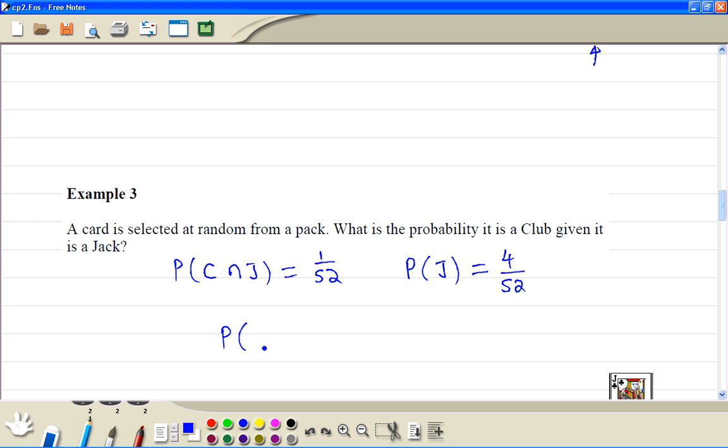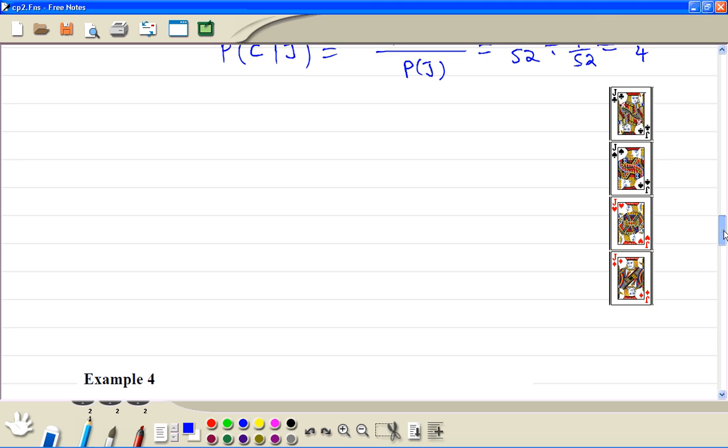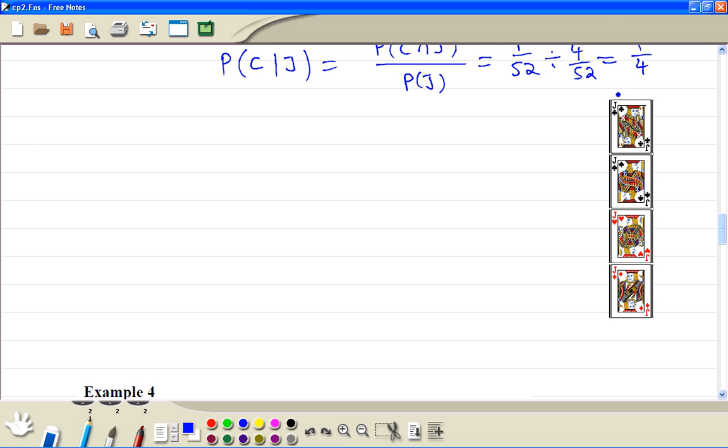Then we work on the probability of a jack - so this is club and jack divided by jack. So this is 1 out of 52 divide by 4 out of 52 and we will get the answer 1 out of 4. And this question we were given this set so then there's one club out of four.